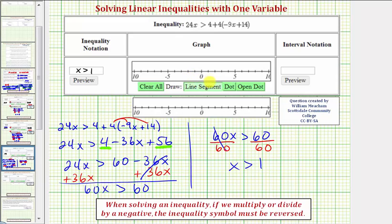An open point indicates that endpoint is not included. So we click on the open dot tool and click on one for an open dot or open point. And because x is greater than one, we graph to the right using the line segment tool. This is the interval where x is greater than one.